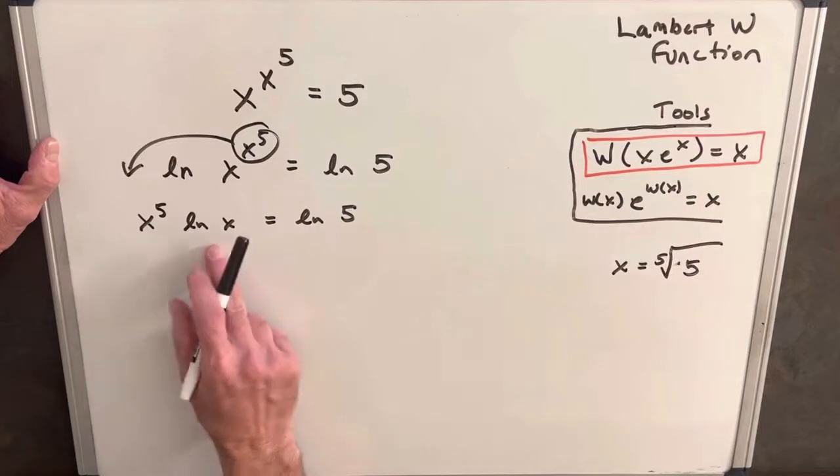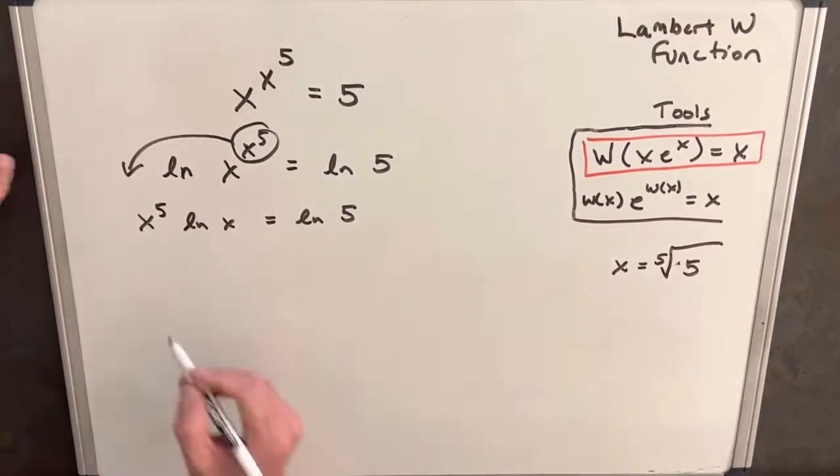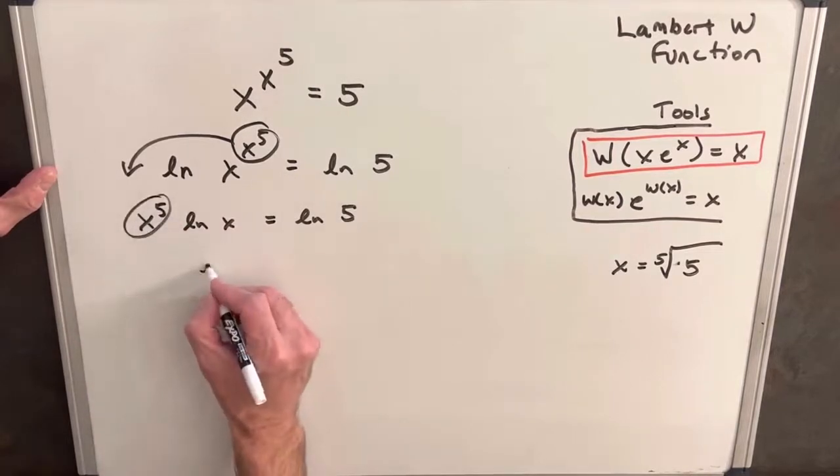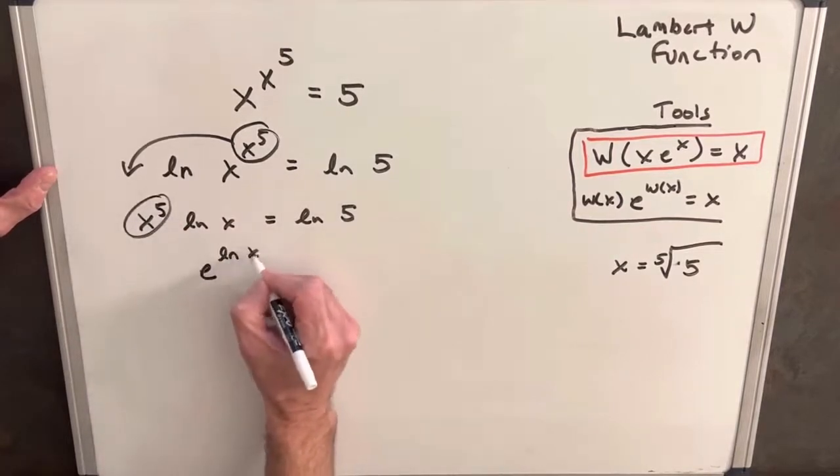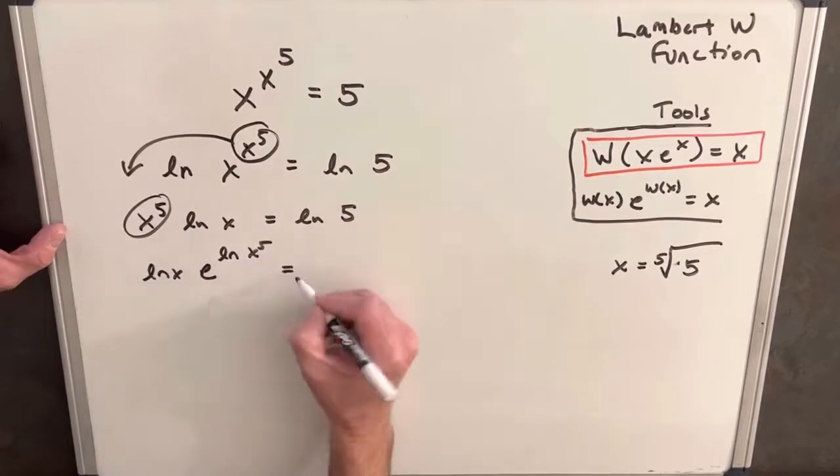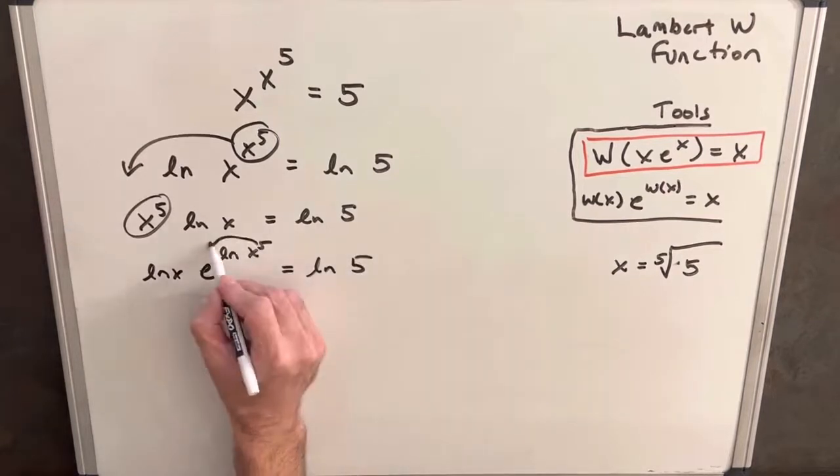And remember we want to manipulate this into this form here where we can use this to simplify, but we've got nothing that actually has an e in it right now. So let's see if we can fix that. What we can do is we can take this term and we can rewrite this as e to the ln, that's to the fifth. We'll have our ln of x up front and then we'll have ln of five, and then take this five and bring it to the front of the ln.